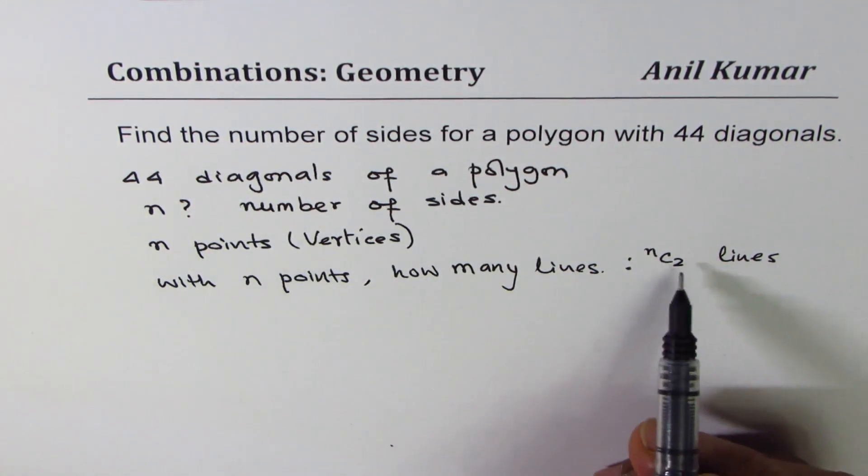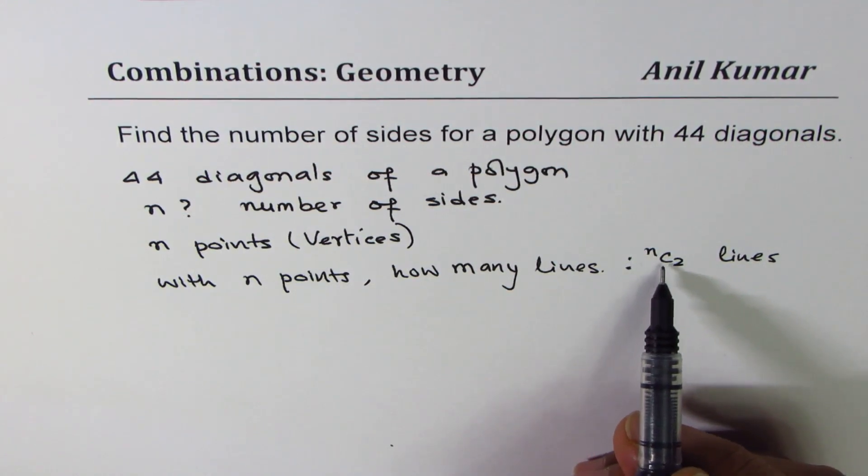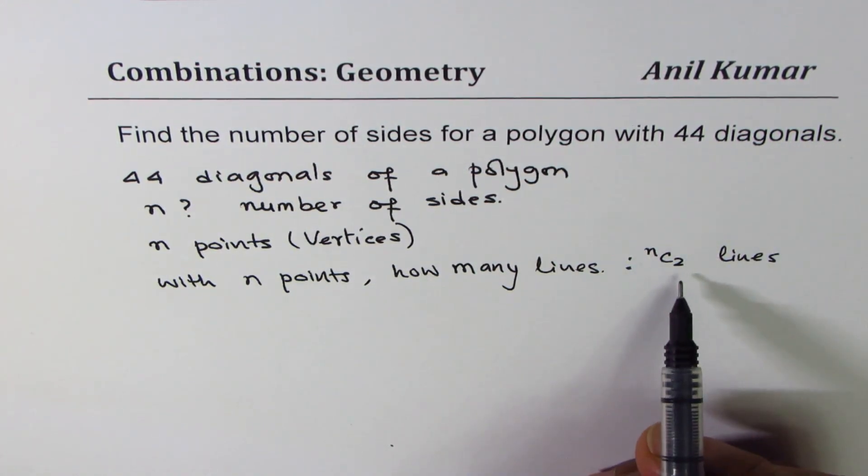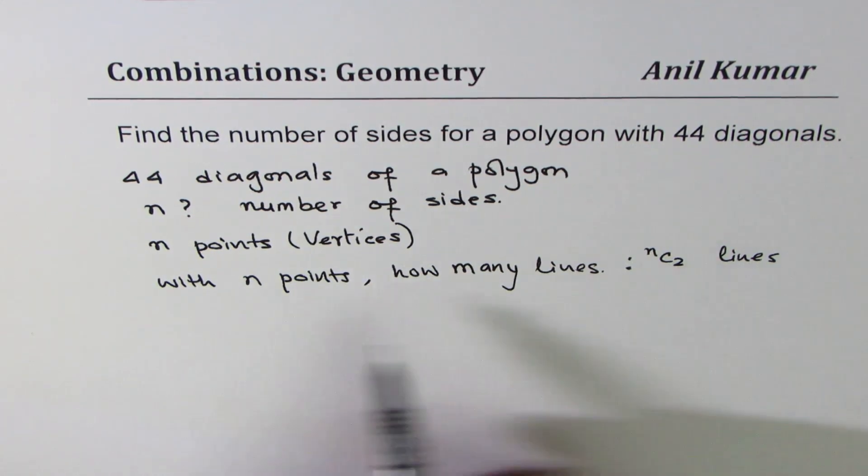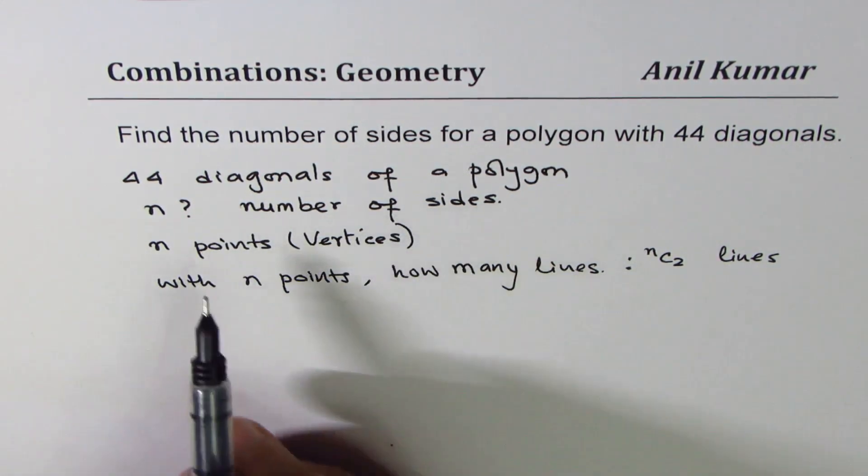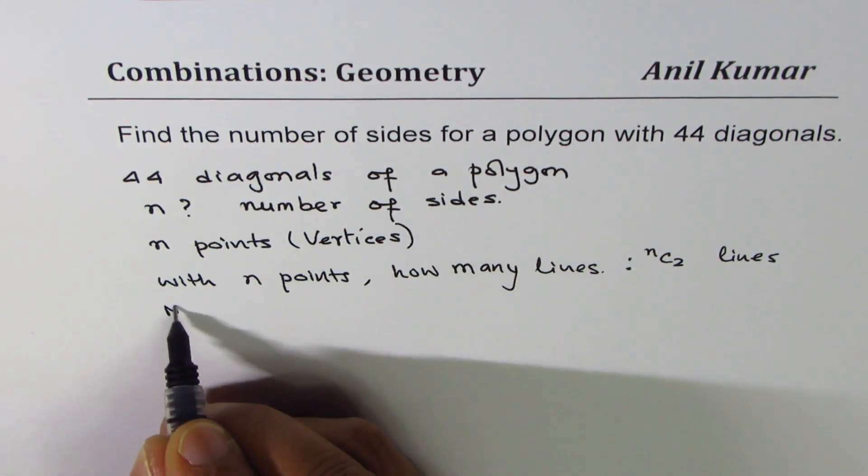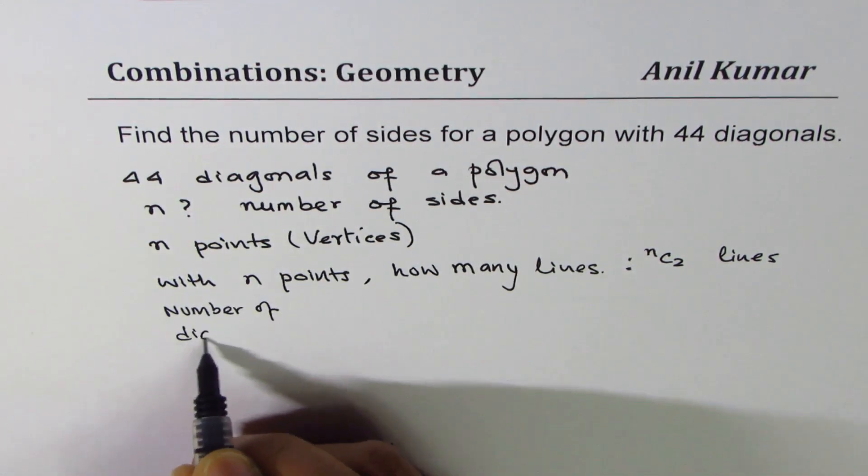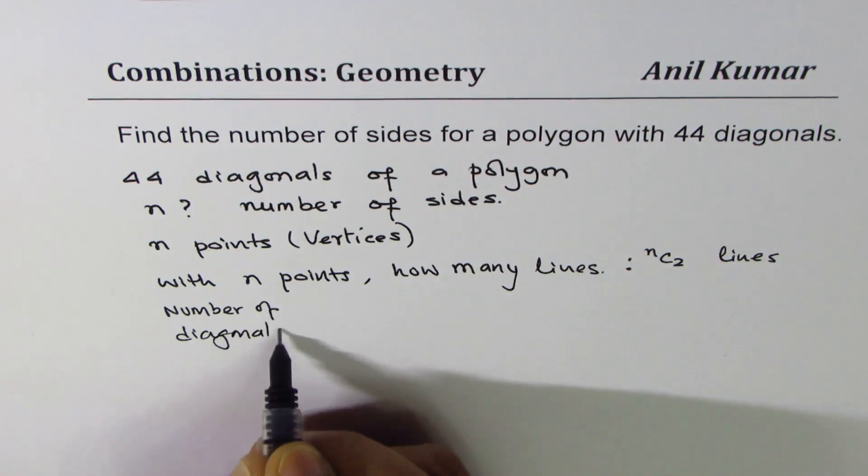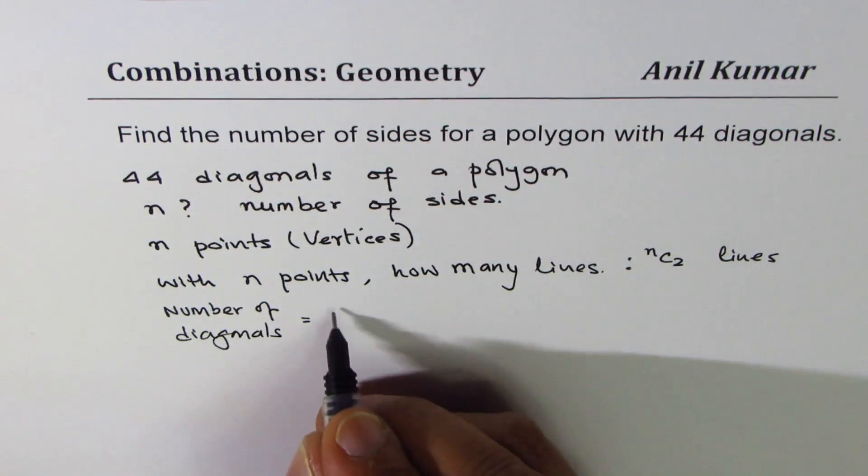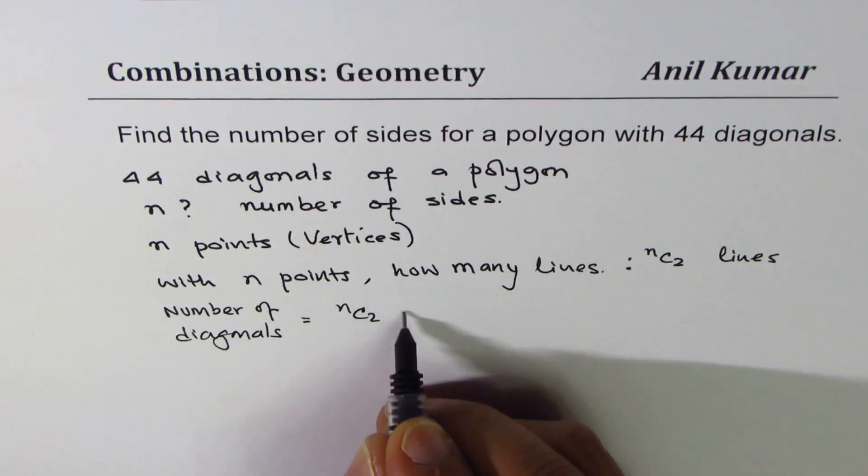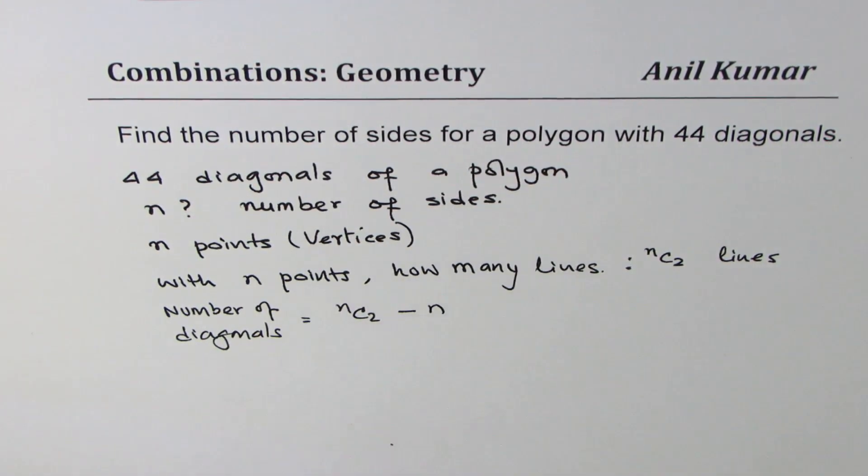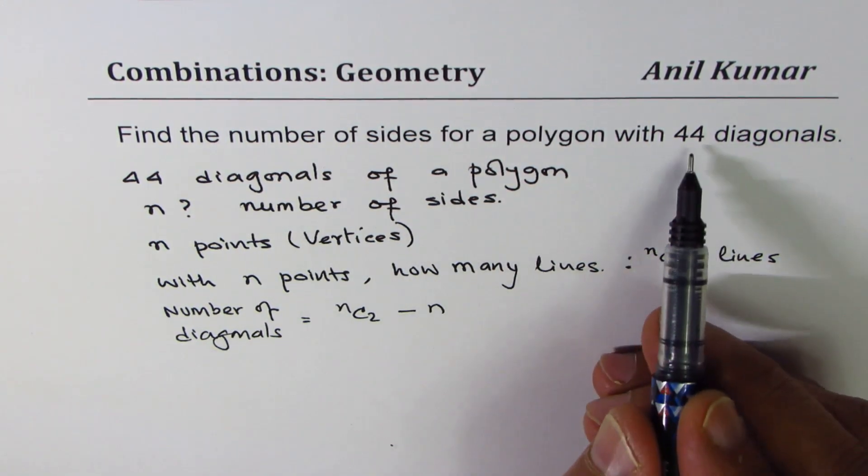Out of which how many are sides of polygon and how many are diagonals? Well, n are the number of sides, and therefore the number of diagonals will be equal to nC2, total number of lines, take away n which is the edges of the polygon. What we are given here is that there are 44 diagonals.